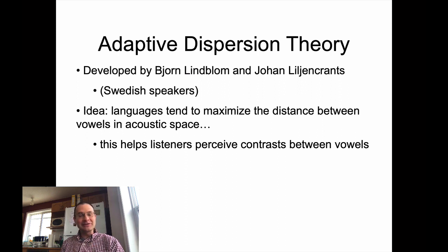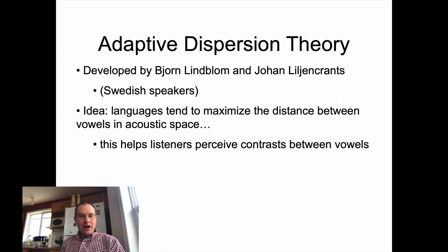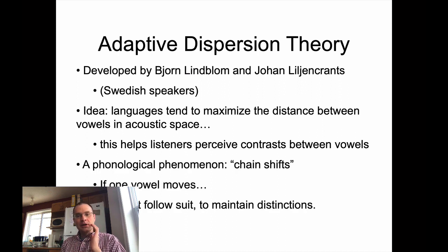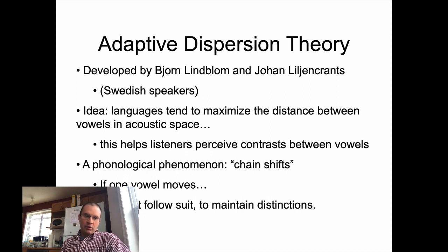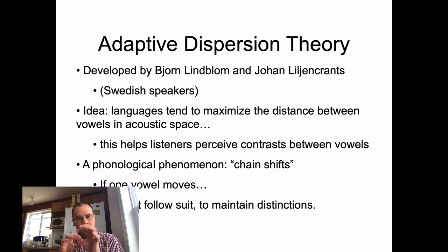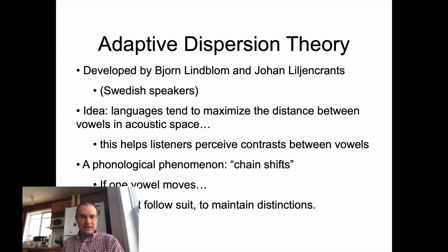The idea is that when you say something, you want people to understand what you say. And in order for them to be able to do that, you have to make what you say distinct from other things that you might be saying. So this is about perception. And this is related to an interesting phonological phenomenon called chain shifting, which is that when you do mess around with a vowel system in some way — if you move one element of it around — then other elements of that system will have to adjust to maintain a fair amount of distance so that you can be understood.